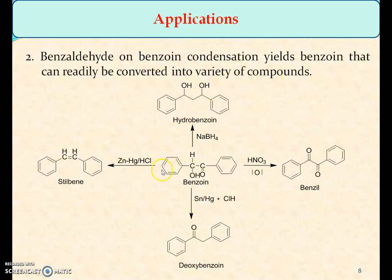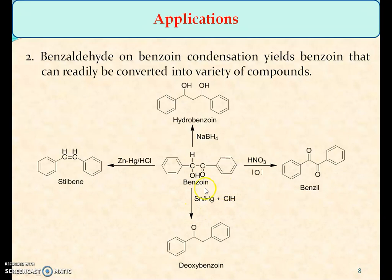The second most important application is that benzaldehyde on Benzoin Condensation generates different varieties of compounds, and this benzoin is useful to give different derivatives. If benzoin is reacted with sodium borohydride, it undergoes reduction to give hydrobenzoin. On oxidation, it gives benzil. With the reaction of tin or mercury in presence of hydrochloric acid, it gives deoxybenzoin. And in presence of zinc amalgam, it gives stilbene benzoin.